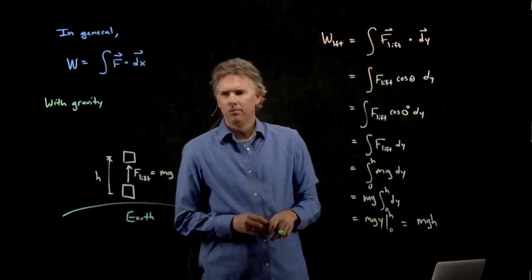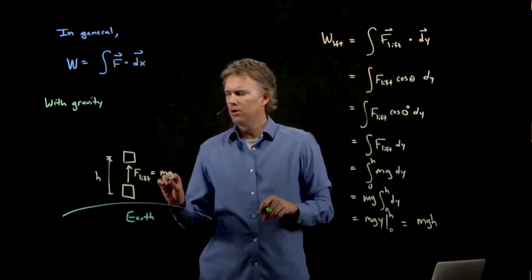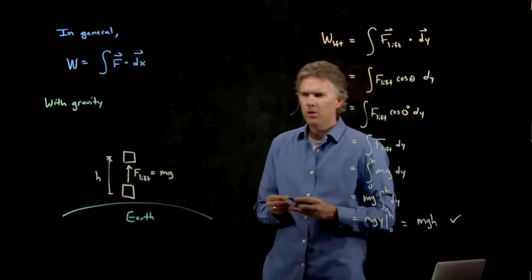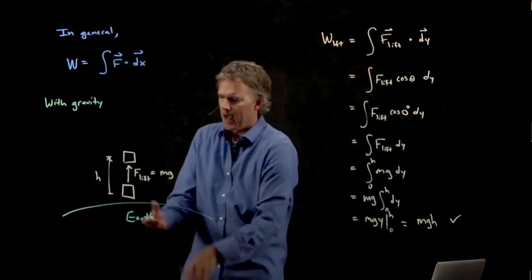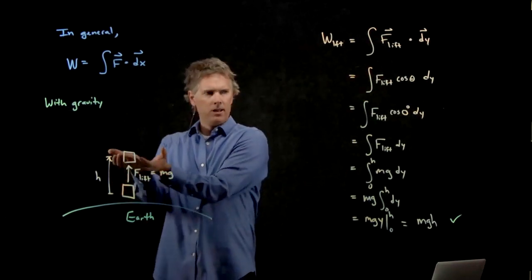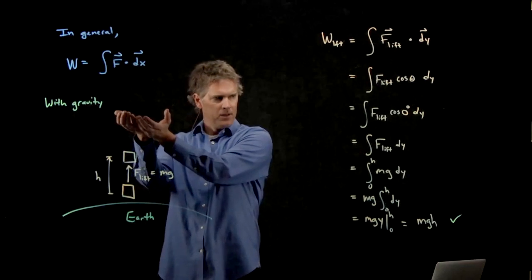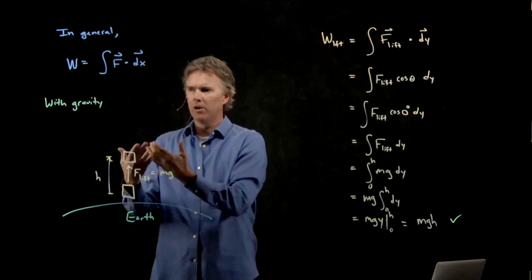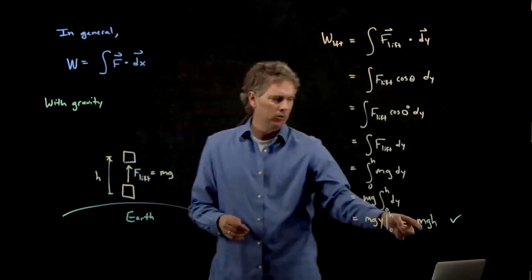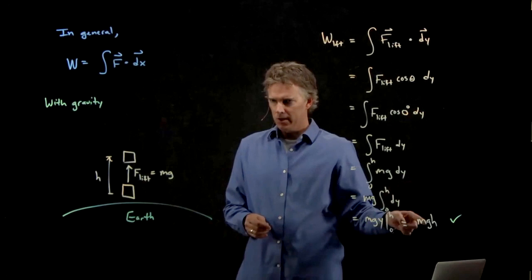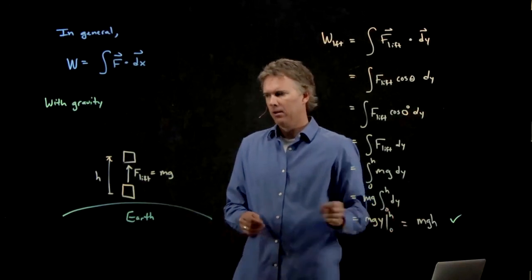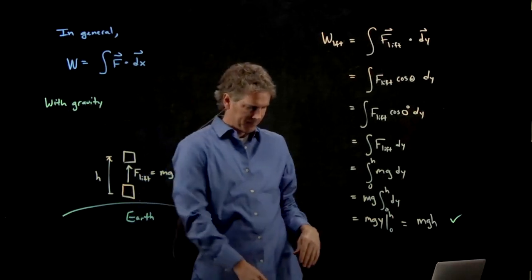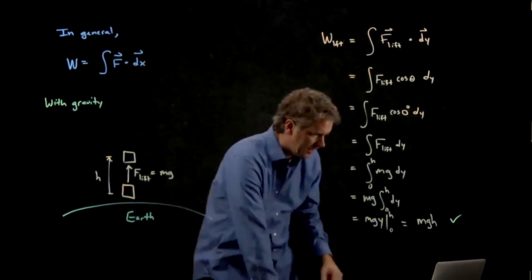Which we already knew, right? We knew that gravitational potential energy was mgh. So what does this mean? What it means is, I've done work lifting this box. But that work is energy. It has to go into something. What does it go into? It goes into the gravitational potential energy of the box. Such that if I let the box go, it will fall back down.